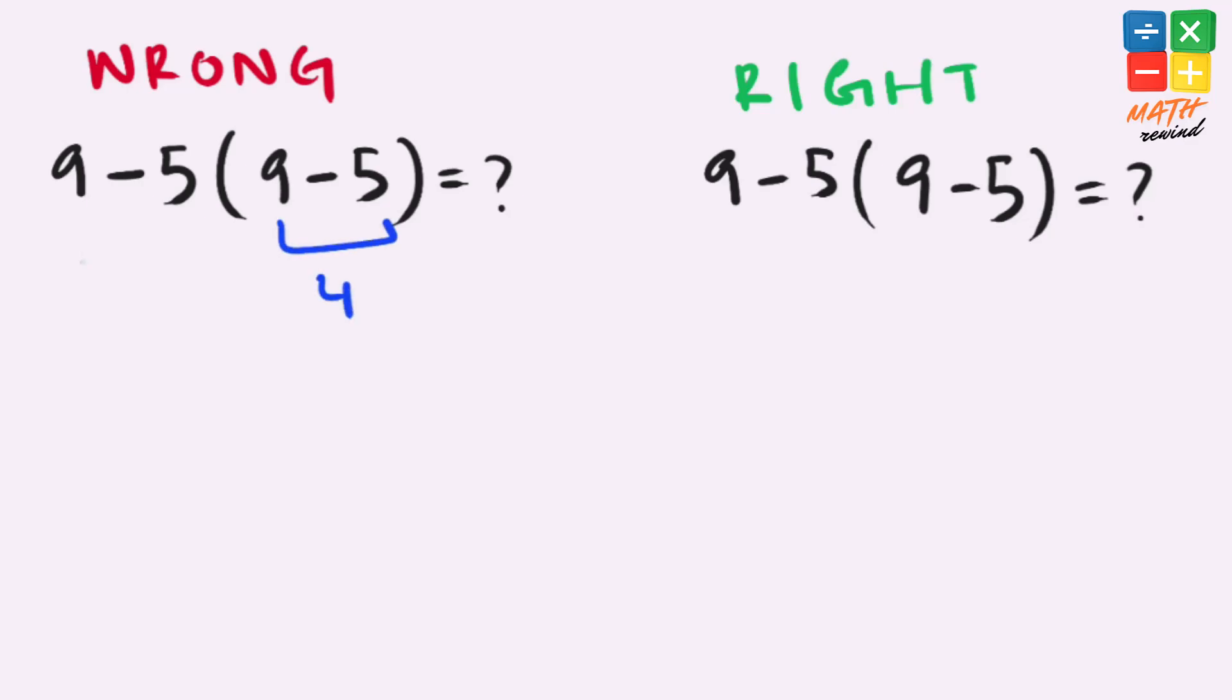9 minus 5 equals 4. 9 minus 5 equals 4. 4 times 4 gives us 16. But this answer is not right.